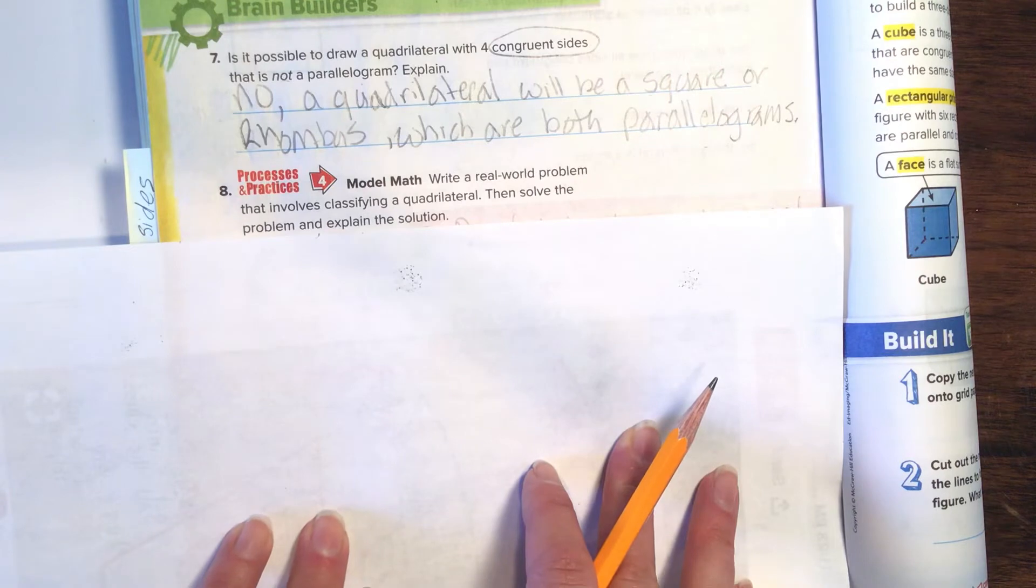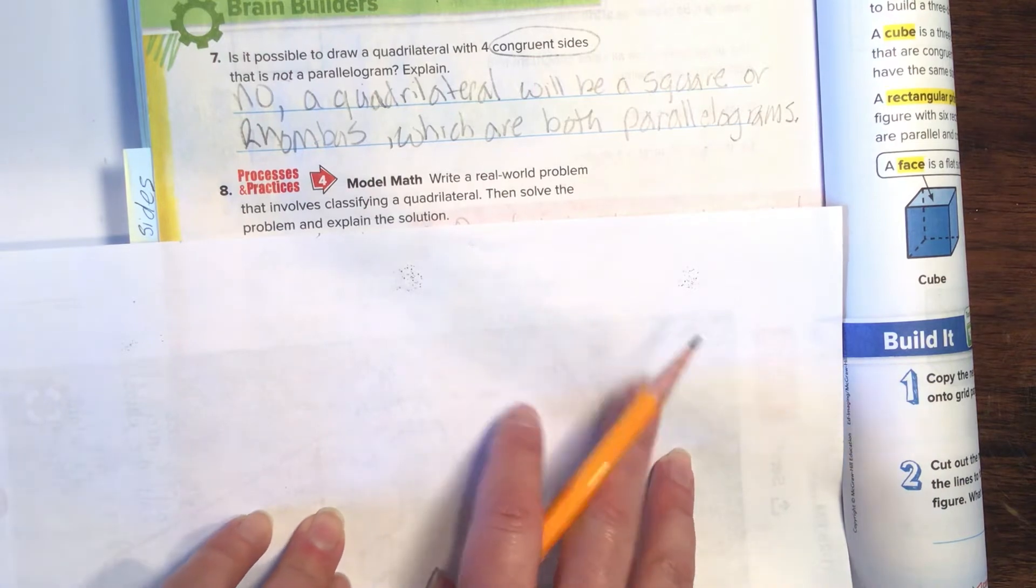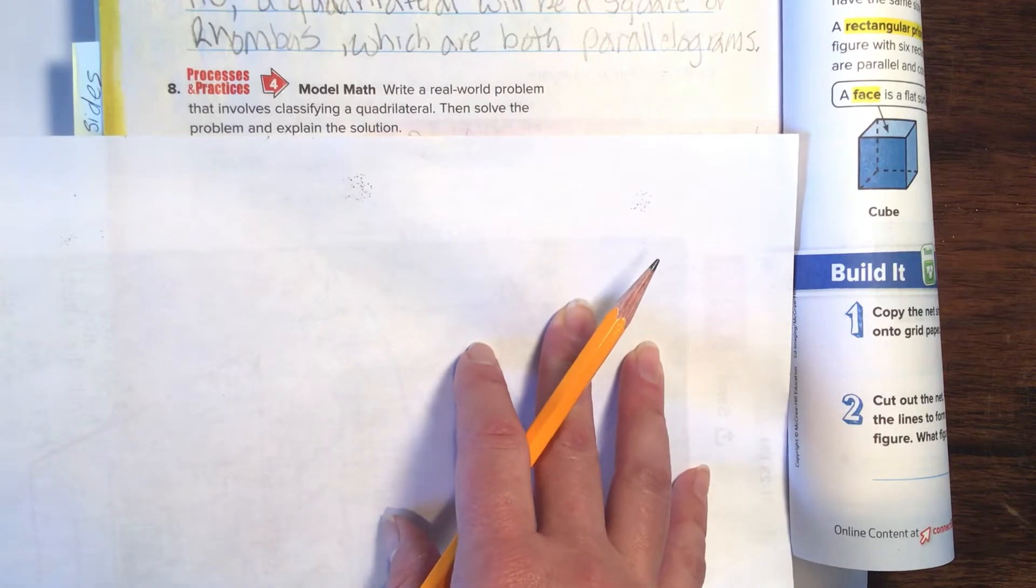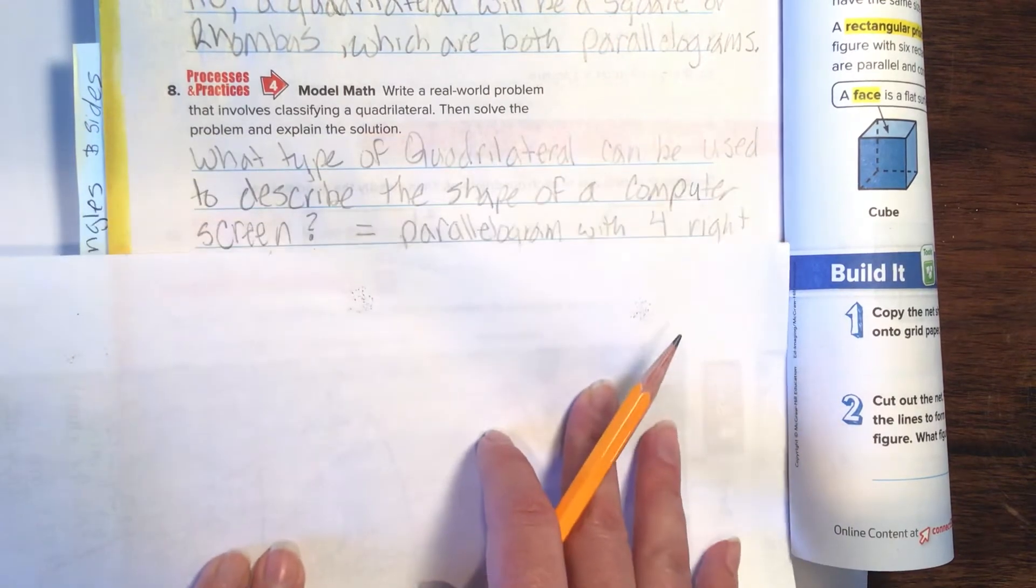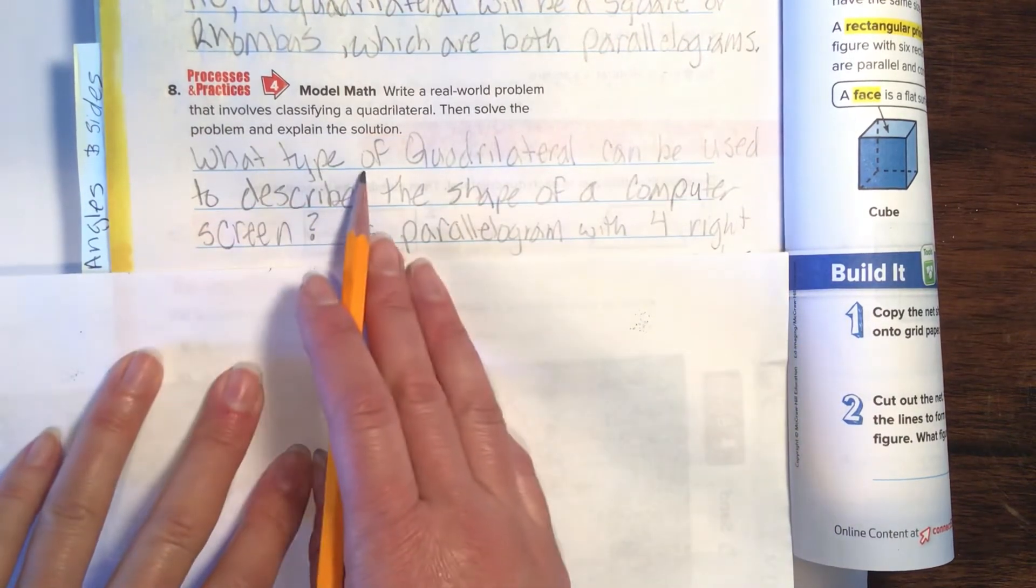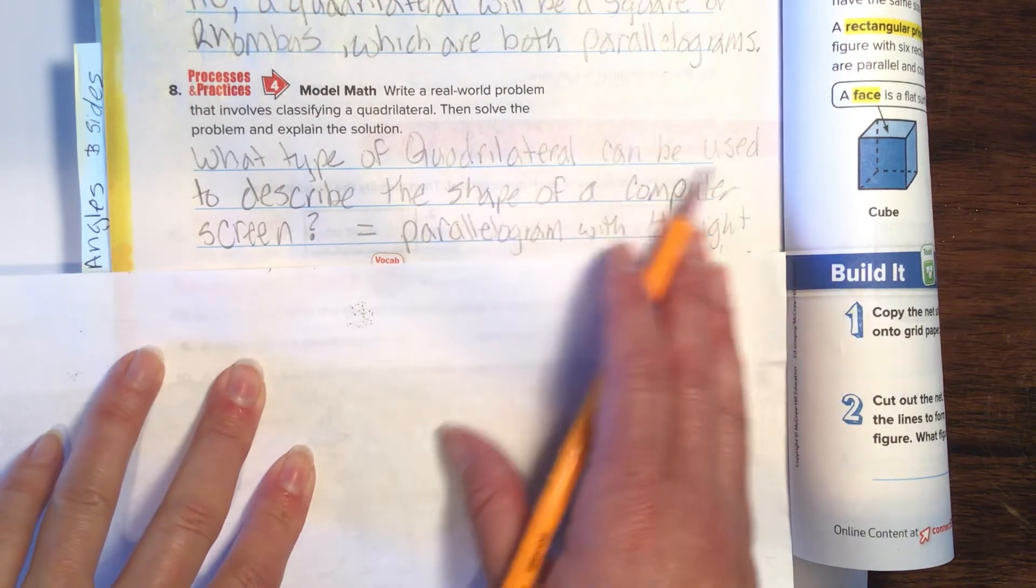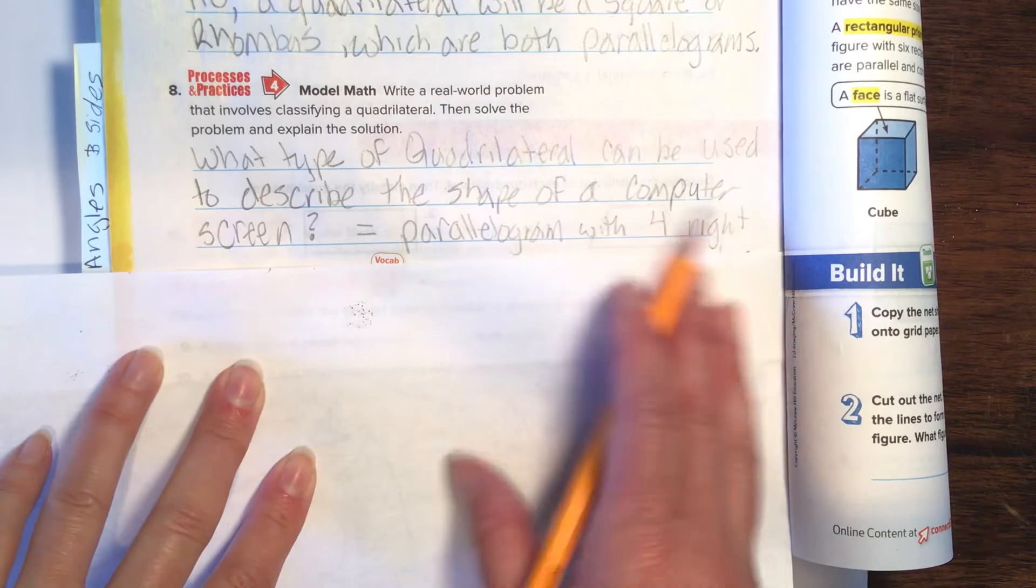Number eight. Write a real-world problem that involves classifying a quadrilateral, then solve the problem and explain the solution. They made it sound like it was really tricky, but after you see the answer, you'll be like, oh, that was easy-peasy. What type of quadrilateral, make sure you use that fancy word in there, can be used to describe the shape of a computer screen?